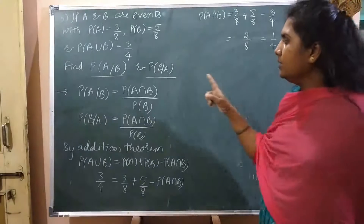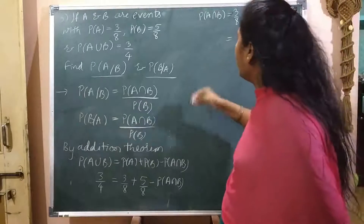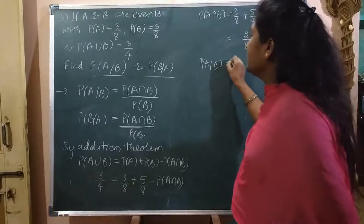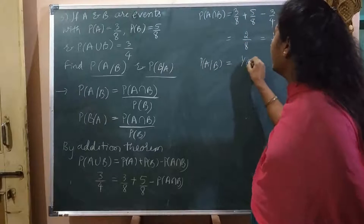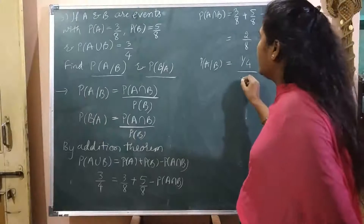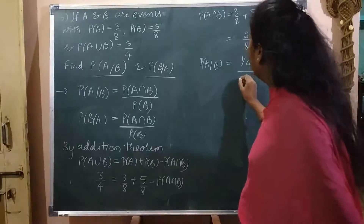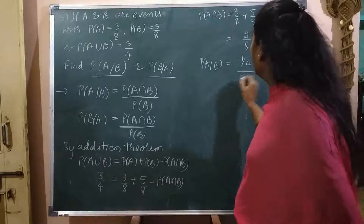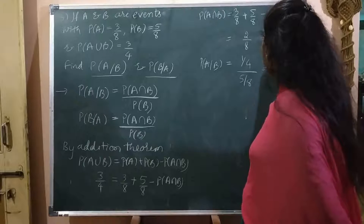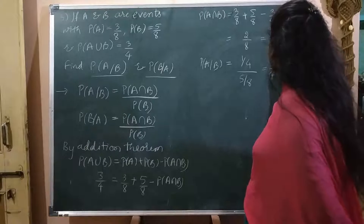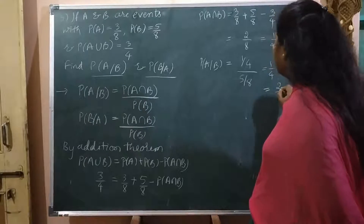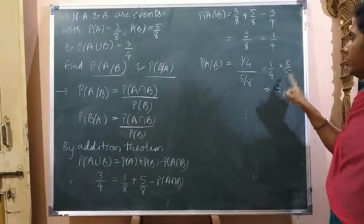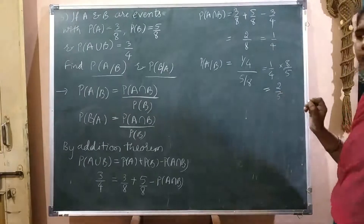Next we find the first conditional probability, P of A given B. That is P of A intersection B divided by P of B, which is 1 by 4 divided by 5 by 8. That equals 1 by 4 times 8 by 5, which equals 2 by 5.